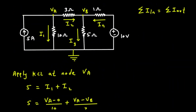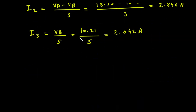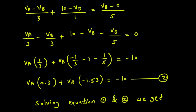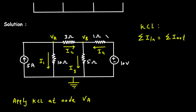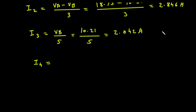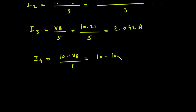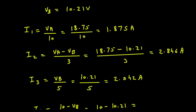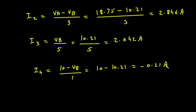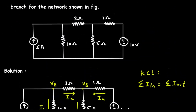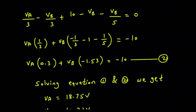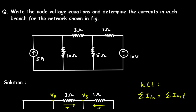I4 = (10 − VB)/1 = 10 − 10.21 = −0.21 Ampere. This is how we solve the problem using nodal analysis. Download our electrical engineering app from the link in the bio of this channel and check out other videos related to power electronics, signals and systems, digital electronics, and much more.